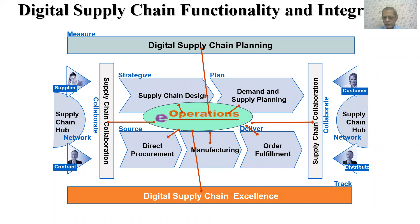When we talk about the digital supply chain, planning is an important area and this plan requires a strategy. Now the strategies are basically of two types. One is on the customer side, where you are looking at demand planning, customer's expectation, the product, the pricing, and building up customer relationships.